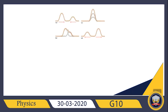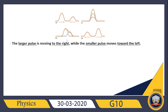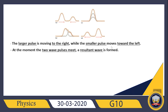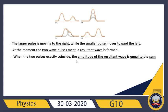Let's see an example. Here are two waves overlapping or undergoing superposition. The larger pulse is moving to the right, while the smaller pulse moves toward the left. They are going to overlap. At the moment the two wave pulses meet, the resultant wave is formed. So at this place they meet together, a new pulse — a resultant wave — is formed. When the two pulses exactly coincide and overlap together, the amplitude of the resultant wave is equal to the sum of the amplitudes of each pulse.